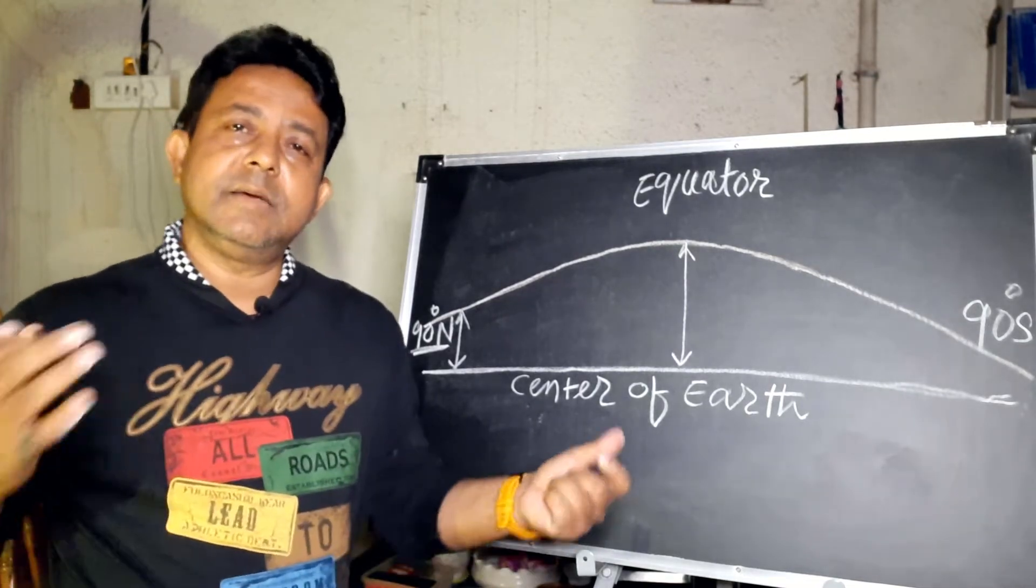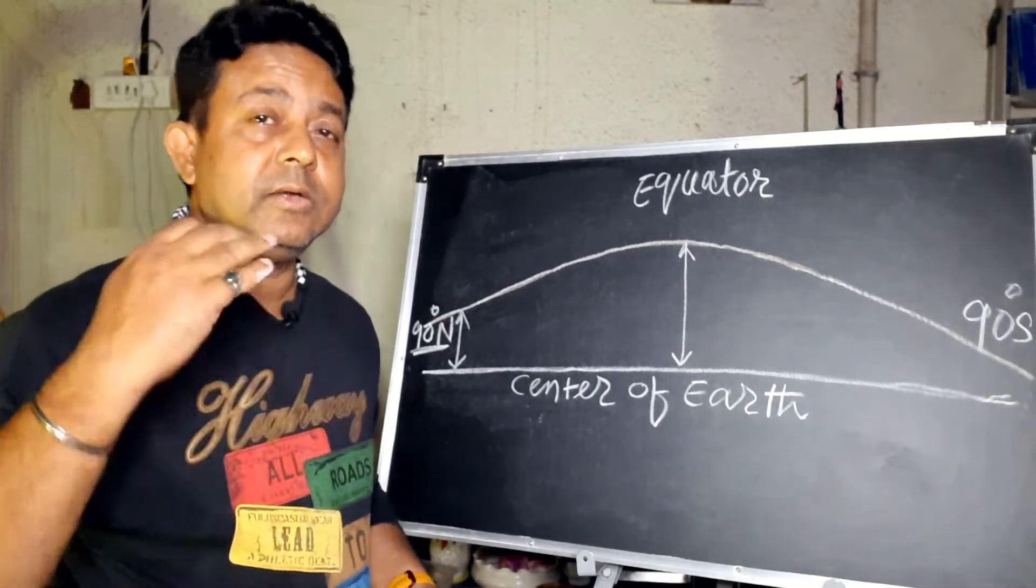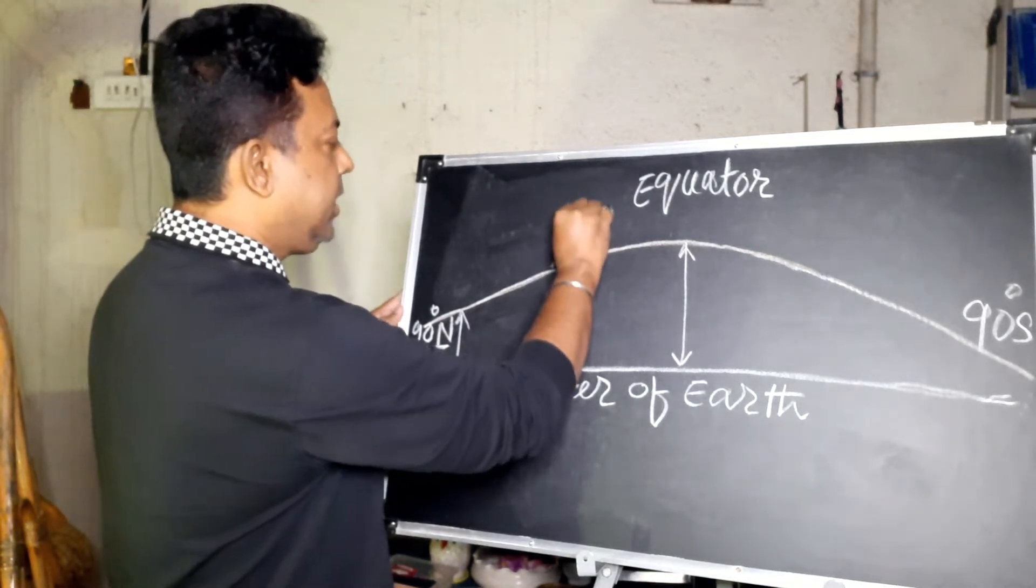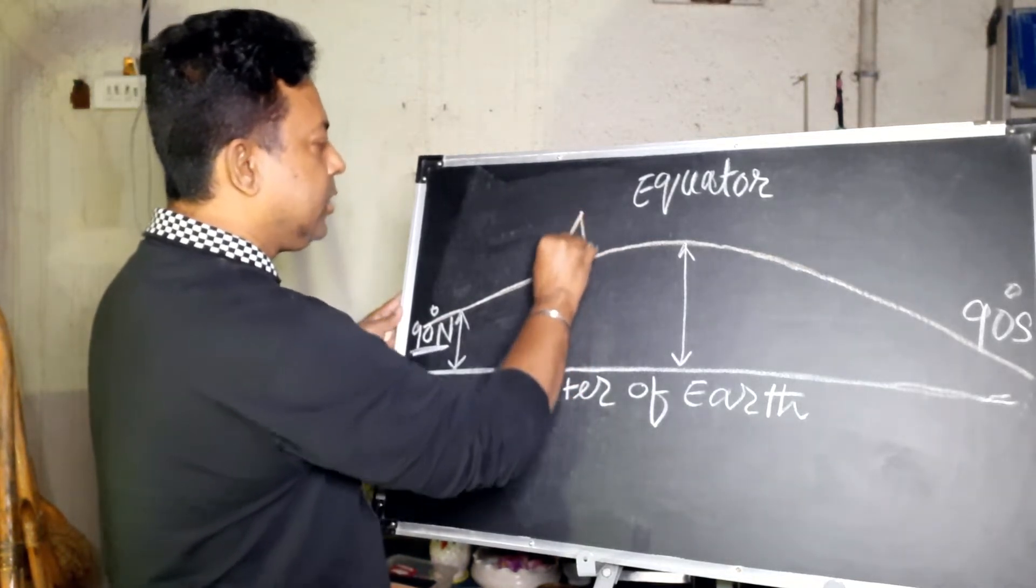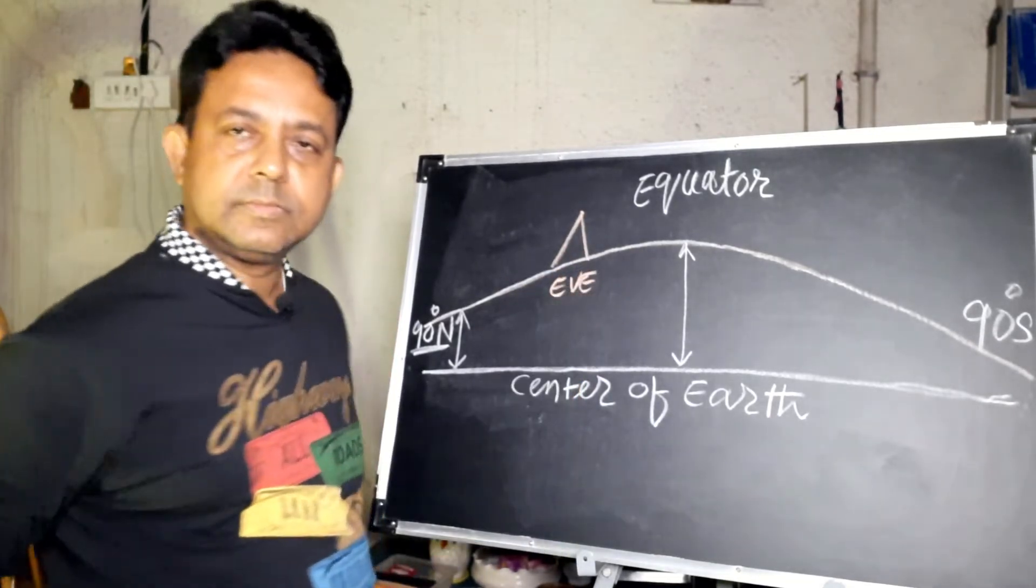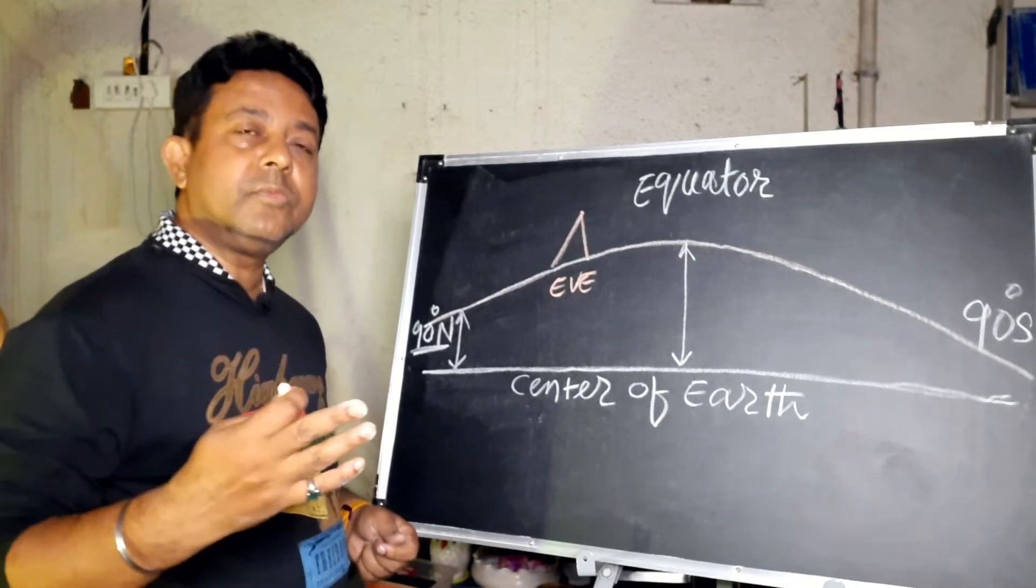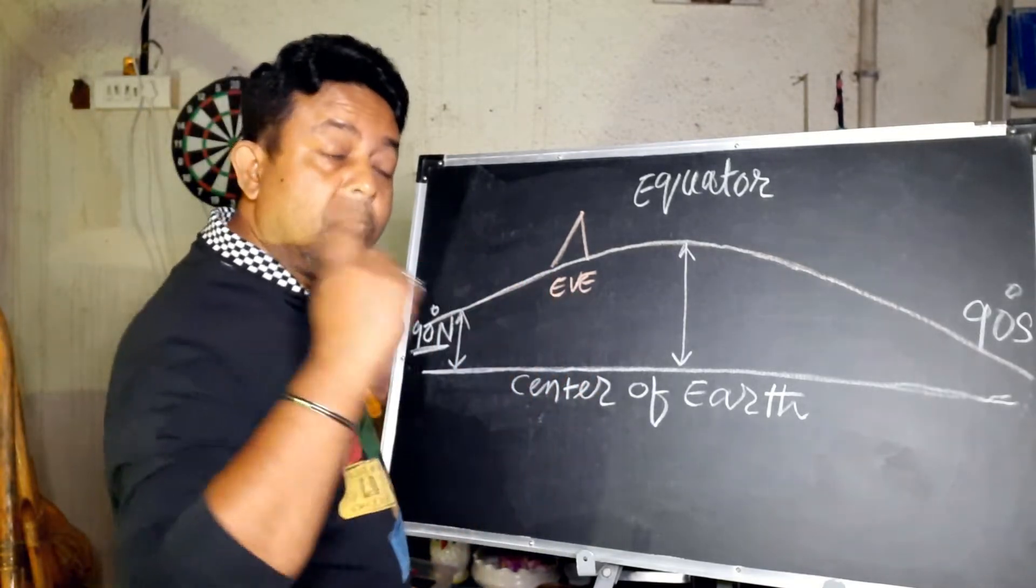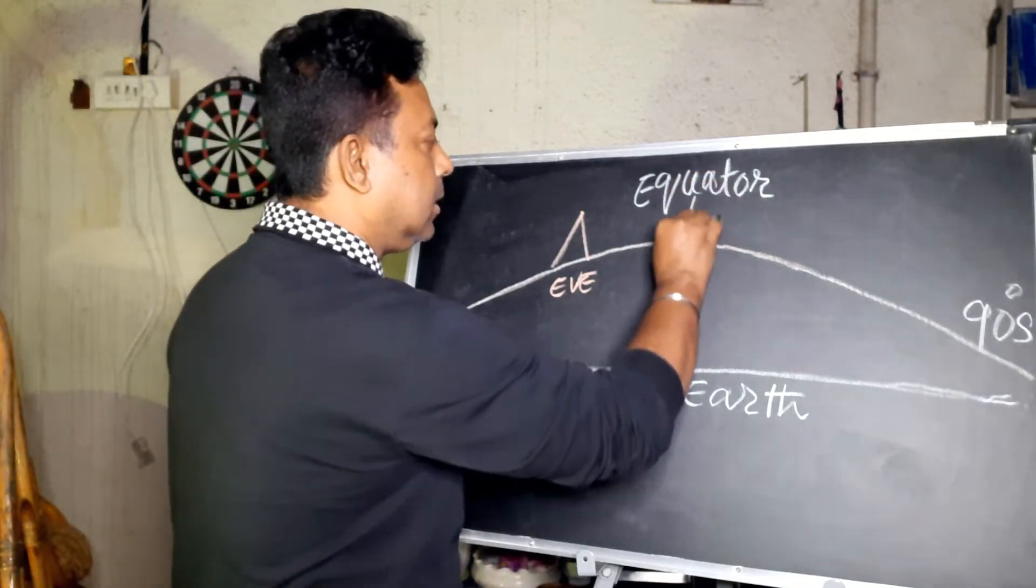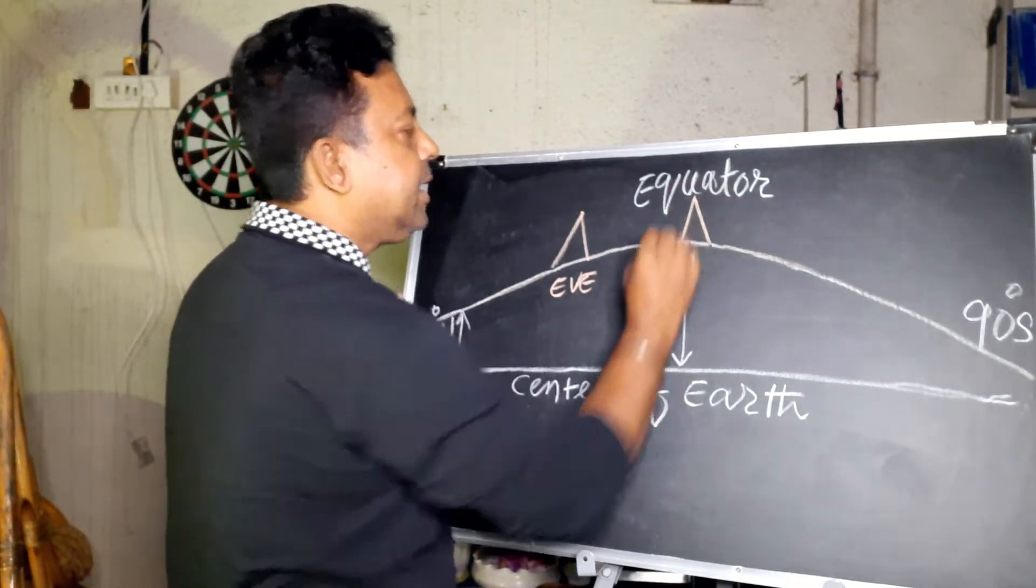So Everest lies at about 28 degree North latitude. So that is about here, 28 degree North latitude, that is Mount Everest. Mount Chimborazo lies at 1 degree South, it is almost at the equator, here it is.